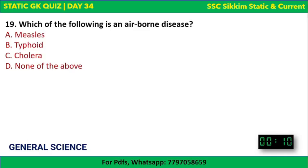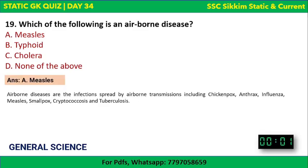Science Question 4: Which of the following is an airborne disease — measles, typhoid, or cholera? The correct answer is measles. Airborne diseases spread through airborne transmission and include chickenpox, anthrax, influenza, measles, smallpox, streptococcus, and tuberculosis. Typhoid and cholera are waterborne diseases that spread through contaminated water.